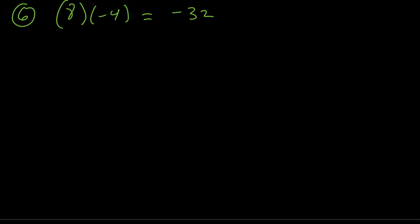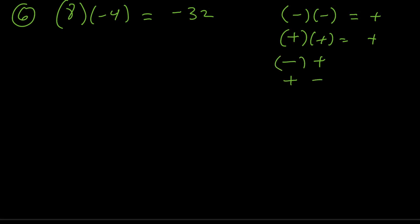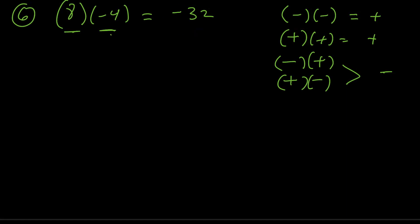For number 6, did you get 8 times negative 4 is negative 32? Here we're switching gears — in the first 5 problems we were doing addition and subtraction; now we're doing multiplication and division. The key rule: a negative times a negative is a positive; a positive times a positive is also a positive. But when you have one negative and one positive, you get a negative result. So 8 times 4 is 32, but one number is positive and one is negative, giving us negative 32. Think of it as spending $4 on coffee eight times — that's $32 going out of your account.